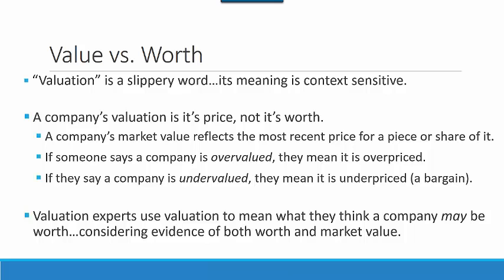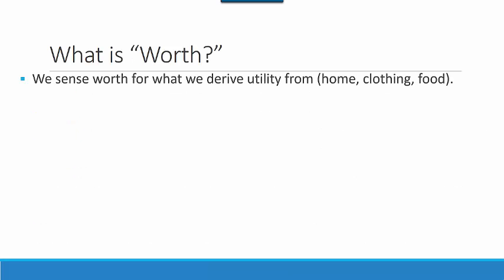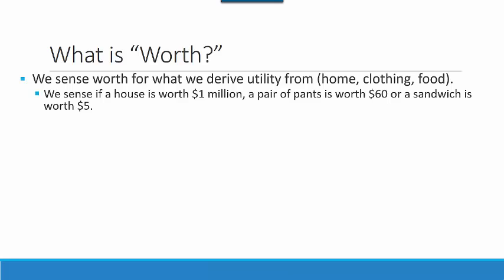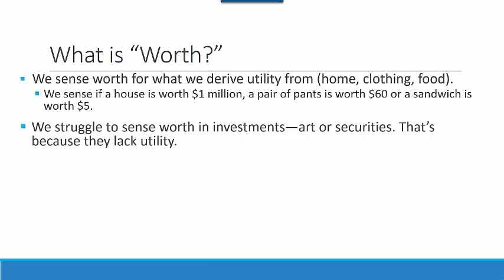As a result, there is often a difference between value, or the valuation, and what something is worth. So, what is worth? We sense worth for what we derive utility from — home, clothing, food. We sense, for example, if a house is worth $1 million, a pair of pants is worth $60, or if a sandwich is worth $5. But we struggle to sense worth in investments, such as art or securities. That's because they lack utility.